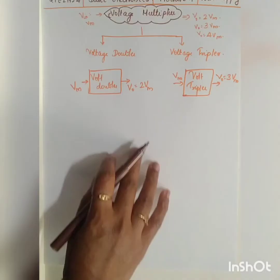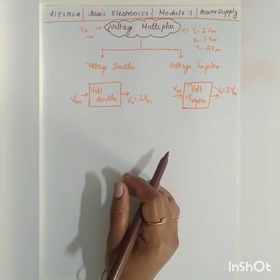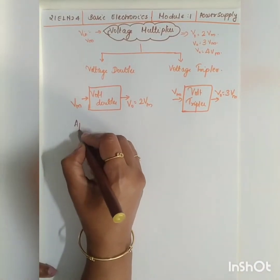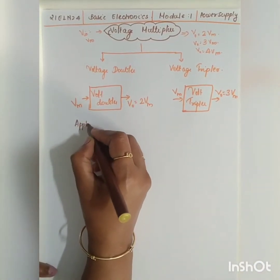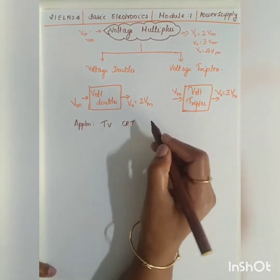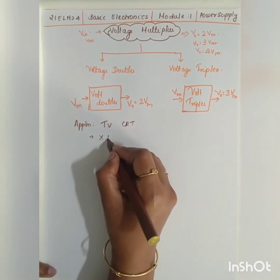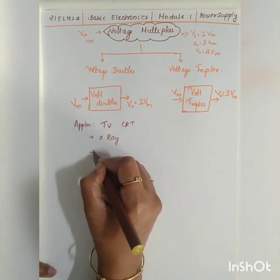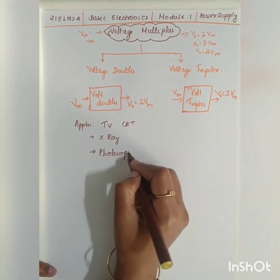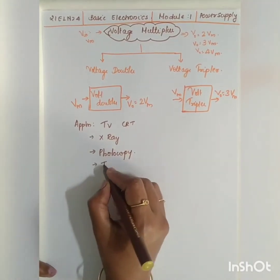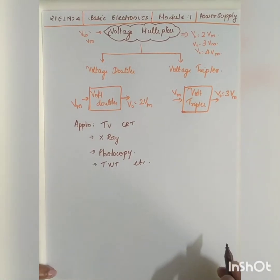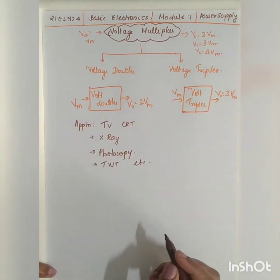Some of the applications of voltage multipliers are in TV cathode ray tubes, X-rays, photocopy machines, and traveling wave tubes, among others.